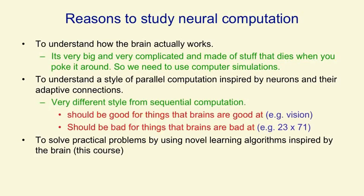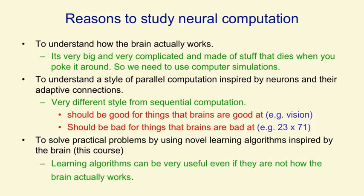This parallel style is very different from computation on a conventional serial processor. It should be very good for things that brains are good at, like vision, and also bad for things that brains are bad at, like multiplying two numbers together. A third reason, which is the relevant one for this course, is to solve practical problems by using novel learning algorithms that were inspired by the brain. These algorithms can be very useful, even if they're not actually how the brain works. So in most of this course we won't talk much about how the brain actually works — it's just used as a source of inspiration to tell us that big parallel networks of neurons can compute very complicated things.